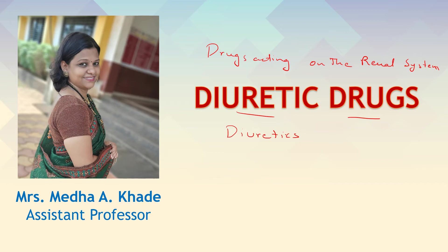This is a quite widely utilized class of drugs. The name 'diuretics' indicates that these particular drugs increase the urine output. So, drugs which are meant to increase the urine output. Now, what is the situation in which you need to increase the urine output? Why do you need to increase the urine output?